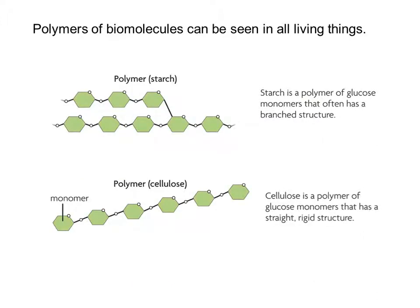A really cool thing about biomolecules is that they can have the same monomer, but depending on how those monomers are put together, we can make totally different large biomolecules or polymers. In both of these images the monomer is glucose, a single unit of sugar. But in the top one it's branched, and the way it's structured makes starch, which is a component of potatoes and some other plants. The single straight chain of glucose makes the polymer cellulose, found in celery and grass — and our bodies actually can't really digest it. So the polymer can be completely different depending on how the monomers are put together.